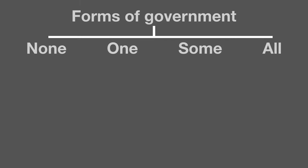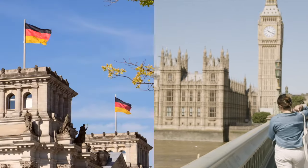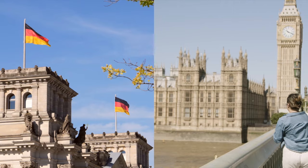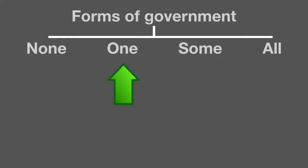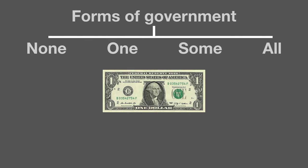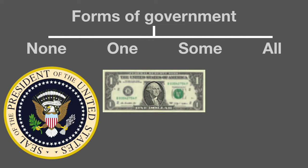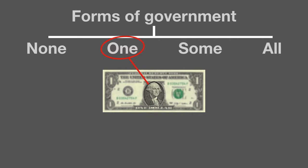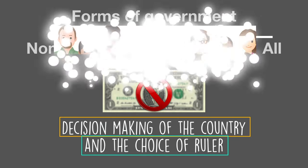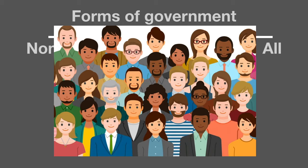Alright, did you think about it? When we think about the form of government and who's in charge, there can be a couple of answers: none or nobody, one person in charge, some or a few, or all — everyone's in charge. When you're thinking about the United States, you were probably leaning towards one person in charge, but that's actually wrong. In the United States, everyone has decision-making power, and we exercise that power by voting.